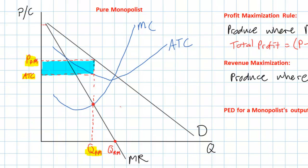What price should a monopolist charge at a quantity of QRM? Just as we determined the price at QPM, we draw a dotted line up to the demand curve and over to the price axis. At QRM, the revenue maximizing quantity, the firm can charge a price of PRM. The price the firm charges when maximizing revenues is lower than the price it charges when maximizing profits, because the firm is now producing at a greater quantity. QRM is greater than QPM.